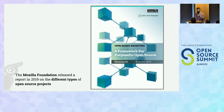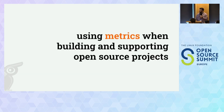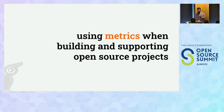The Mozilla Foundation released a report in 2019 on the different types of open source projects, showing that each is created for different reasons, has different governance, chooses different licenses, and engages users and developers to different degrees. Our focus in this presentation is on open source projects that are built by a broad community — not just those with one maintainer or fully controlled by a company. Our specific focus will be on what challenges you may face and how to overcome them.